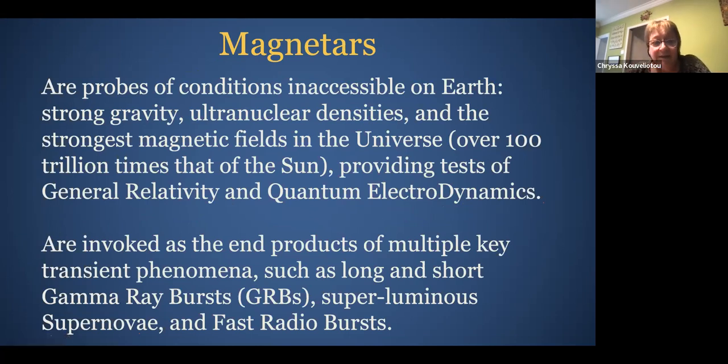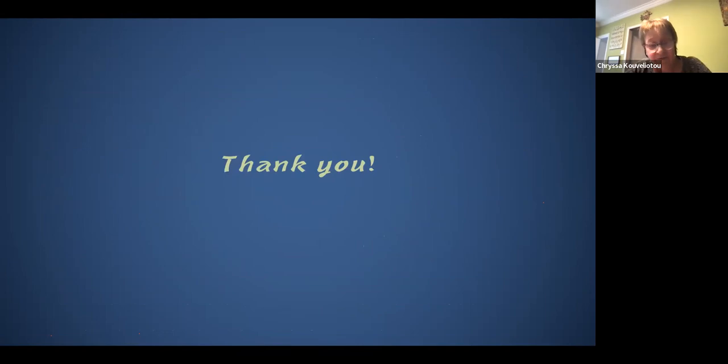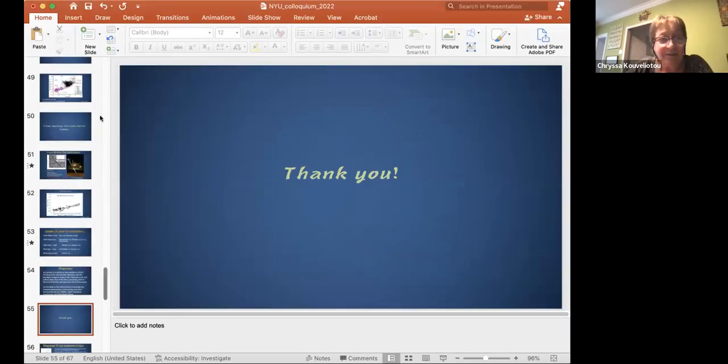So to conclude, magnetars are probes of conditions inaccessible on Earth, strong gravity, ultra nuclear densities, and the strongest magnetic field in the universe, providing tests of general relativity and quantum electrodynamics. And they are invoked as the end products of multiple key transient phenomena, such as long and short gamma-ray bursts, superluminous supernovae, and fast radio bursts. And that concludes, sorry if I took too long. I'm afraid my time was more than I calculated originally, but I have to get to this meeting. That's why. Okay. So now I need to remove. Okay.